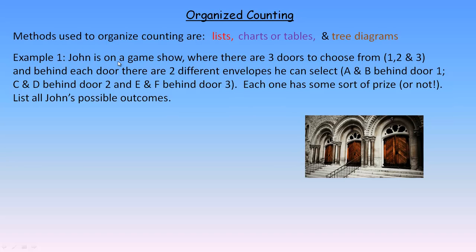So, first example: John is on a game show where there are three doors to choose from — door one, two, and three. Behind each door, there are two different envelopes he can select: A and B behind the first door, C and D behind the second door, and E and F behind door number three. Each one is some sort of prize, or could be a gag prize. We're asked to list all of John's possible outcomes.